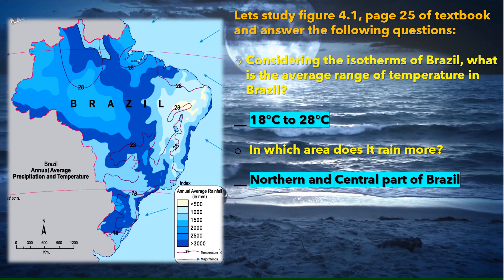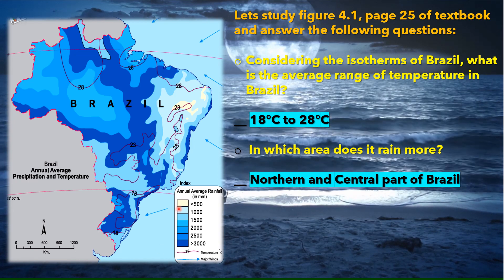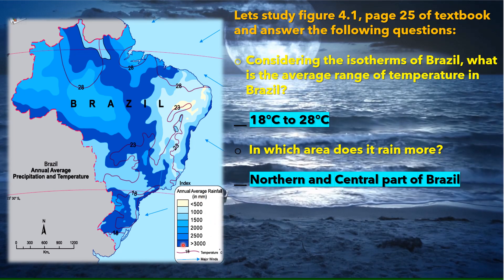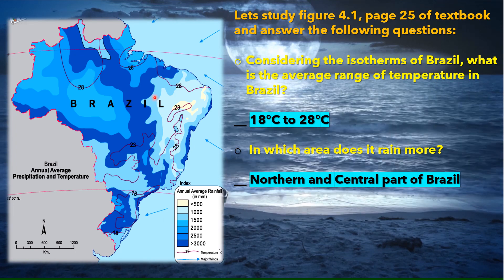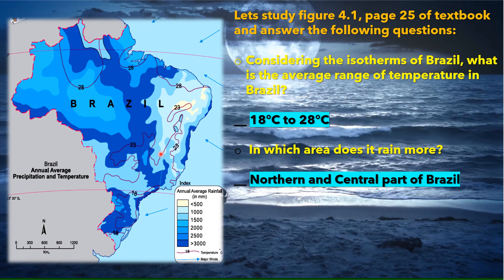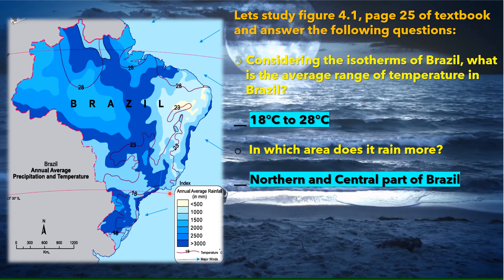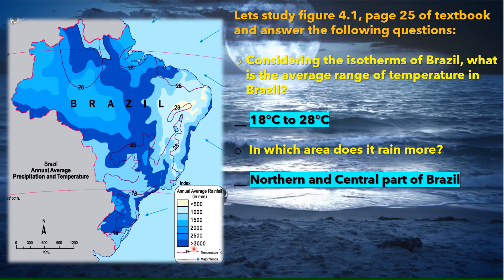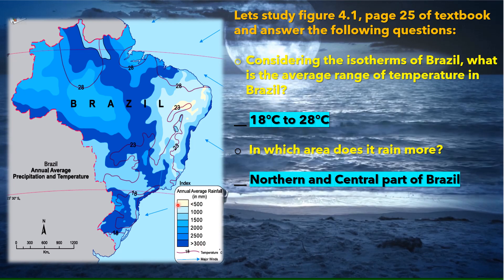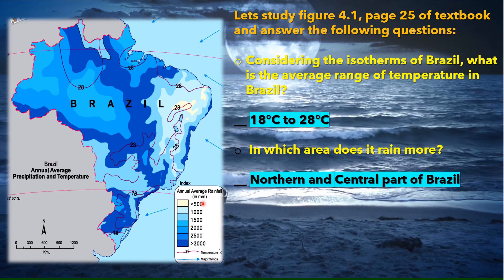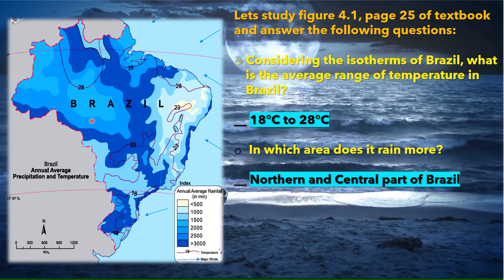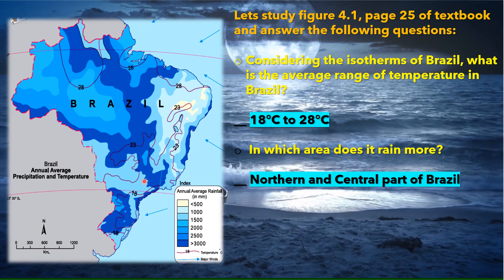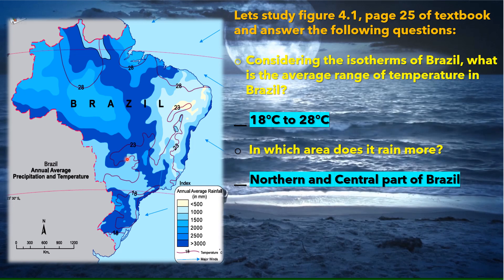In which area does it rain more? To answer this, we look at the index. This map uses the choropleth method, which we studied last year, using different shades of the same color — here, shades of blue. The darkest shade shows maximum rainfall and the lightest shade shows minimum rainfall. From the map, it rains more in the northern and central parts of Brazil.